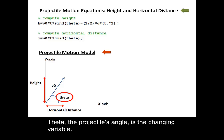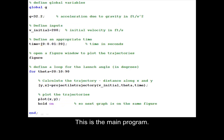Theta, the projectile's angle, is the changing variable. This is the main program. Define the global variable g.